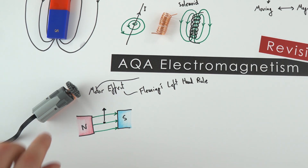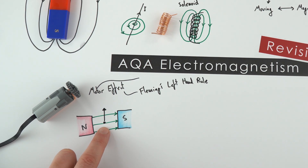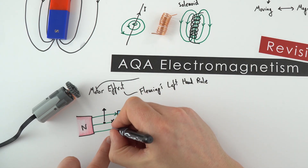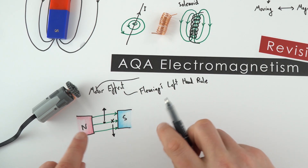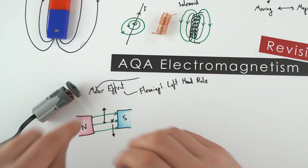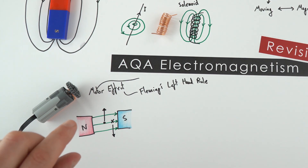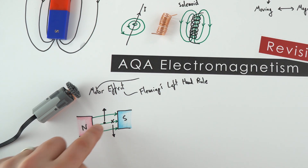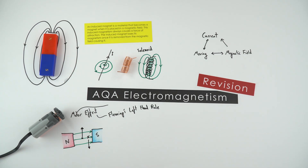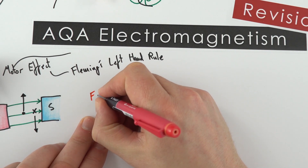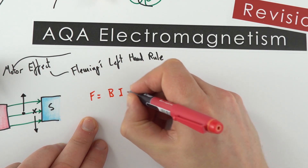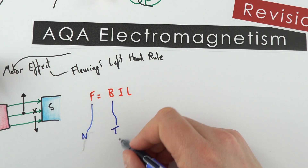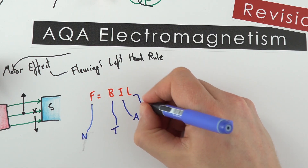How does a motor work? You have a coil of wire where some of the current flows towards you and some flows the other way. As soon as you pass the current, some of the wire moves up and some moves down. A split ring then allows electric current to keep flowing in the same direction inside the motor. We can also use an equation for the size of the force on the conductor: F equals BIL, where force is in Newtons, magnetic field B is in Tesla, current I is in amps, and length L is in metres.